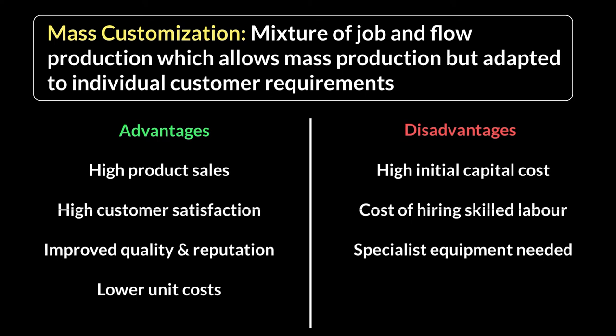The disadvantage is that you'll still need specialist equipment — for example, Subway uses specially designed ovens — so significant capital investment is required. Your workers also need training because they all have to customize the final product: cutting, baking, finishing. But overall, mass customization is a great mix — you get the best of flow production's efficiency and the customization option of job production. That covers all four methods: job, batch, flow, and mass customization.